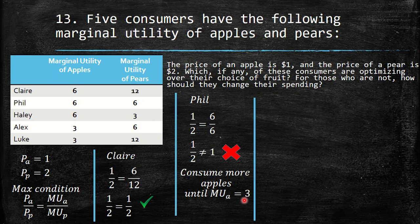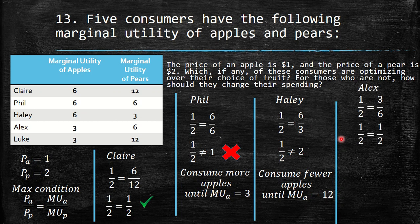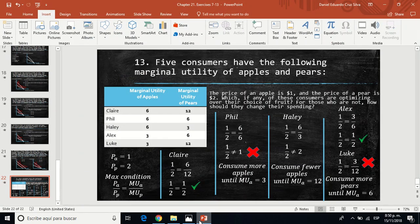For Alex: 1/2 equals 3/6 — that's correct, so Alex is optimizing. For Luke: the ratio does not satisfy the condition, so he should consume more pears until the marginal utility reaches 6. So that was all for that video. I hope you have enjoyed and understood. See you next time. Bye-bye.